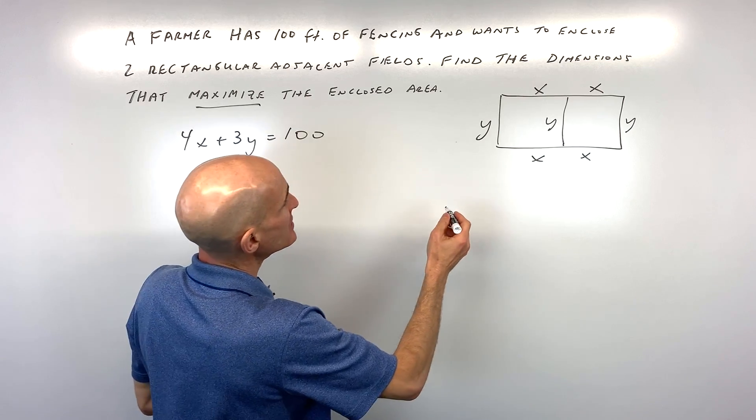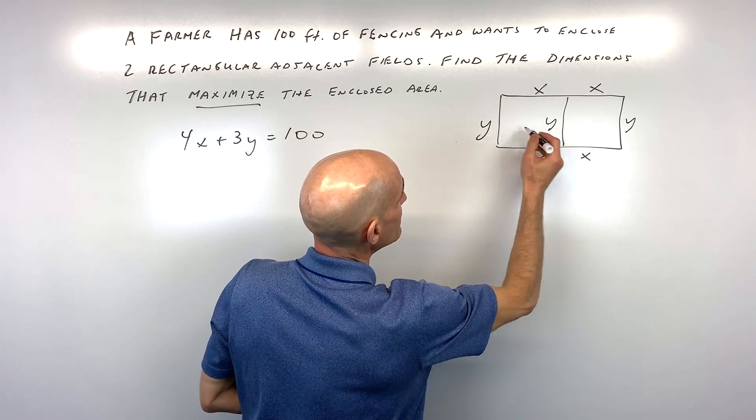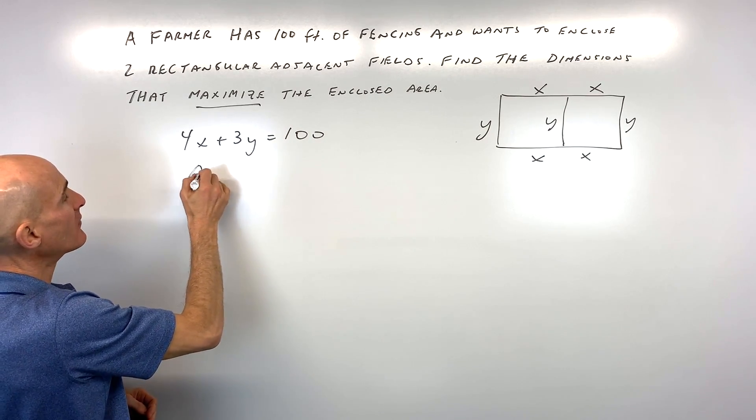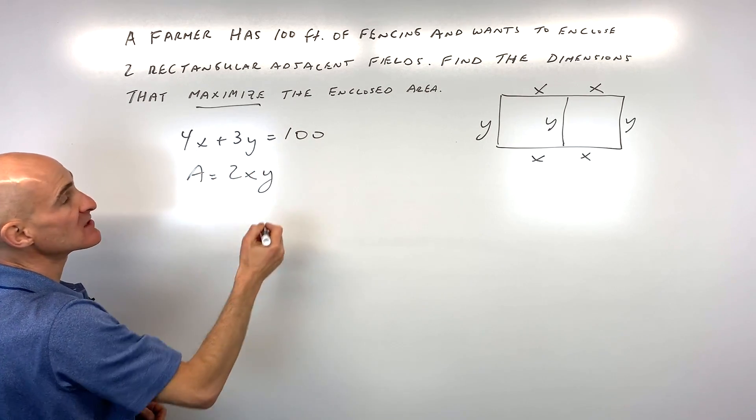And then our area equation is going to be length times width or base times height. So this is going to be 2X times Y. So we have area equals 2X times Y.